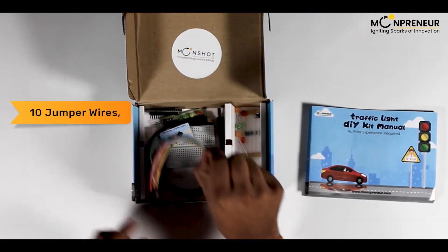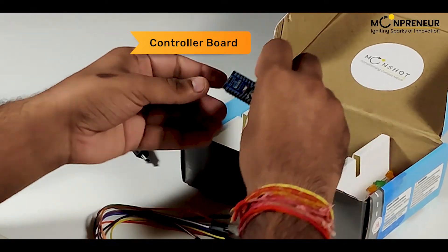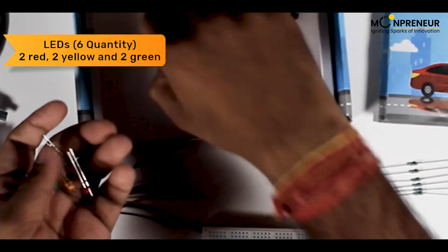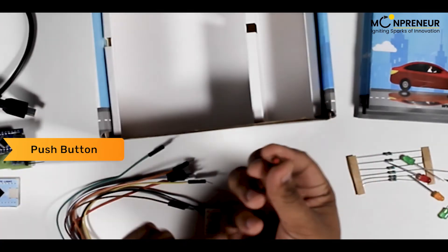Then we have 10 jumper wires, red board, controller board and its cable, 6 resistors, 2 red, 2 yellow, and 2 green LEDs, push button, moon card, and traffic light board.